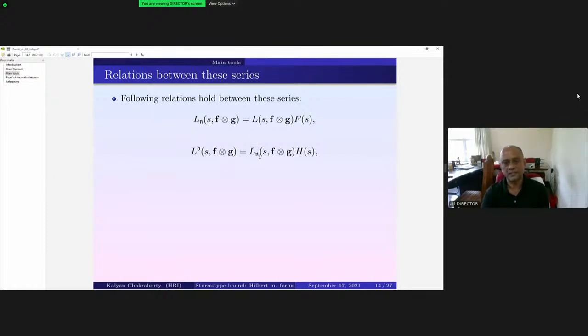There is a little work there that if one is interested can look at the paper. L_n(s, f×g) times h(s), where f(s) and h(s) are Dirichlet series which are absolutely convergent on that half plane. So they are nice. So we introduced two new Dirichlet series in terms of this Rankin-Selberg convolution and wrote down the relationship that they satisfy between themselves.